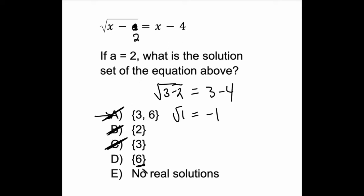But if I plug in 6, then I get the correct answer. I find that the square root of 6 minus 2 is equal to 6 minus 4. Square root of 6 minus 2 is square root of 4, which is 2, and 6 minus 4 is 2. So the correct answer here is D.